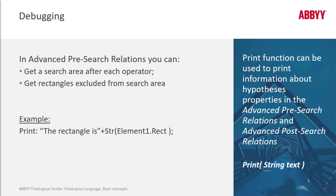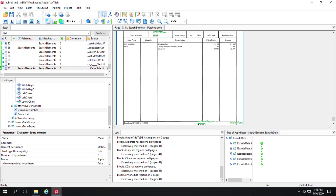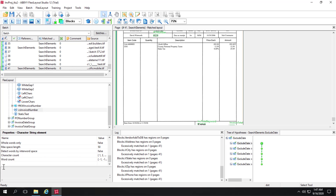We can speak a bit about debugging. We already mentioned the use of commenting — commenting out lines to aid in debugging. You can also use a print function in the Advanced Post-Search Relations. The results of that print statement will show up in the properties of that element. If we look at this character string, we have a number of properties, and if we had a print statement in our code, that would show up with the value of post-search print. You can have more than one print statement.